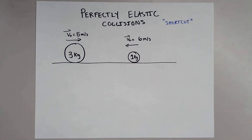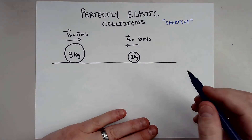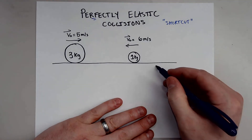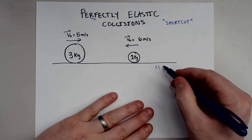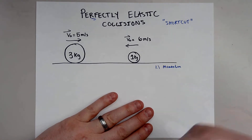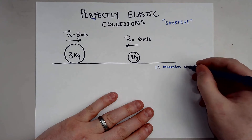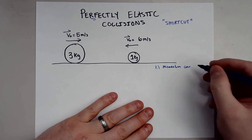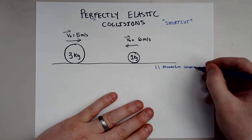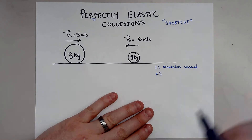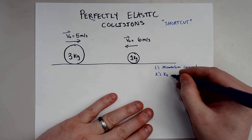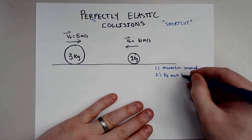First thing we need to understand — the shortcut is this. In a perfectly elastic collision, we know that momentum is conserved. Pretty much in all collisions with no external forces, all the momentum is always conserved. We also know that what defines a perfectly elastic collision is that kinetic energy must be conserved as well.